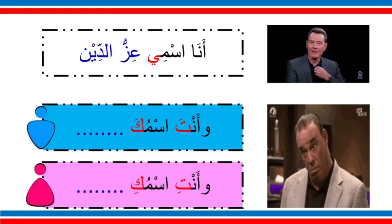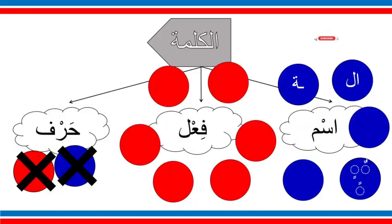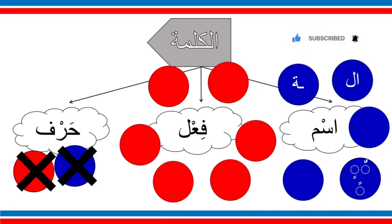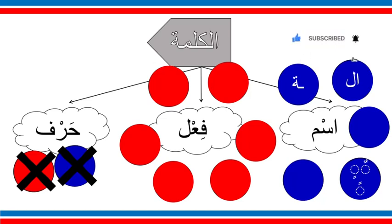From this video remember: al-kalima — the word — is one of three types: ism, fi'il, or harf. Ism has five signs (khams alamat), fi'il has six signs (sit alamat), and harf has no signs. In the comments, write 'ana ismi' then write your name — for example, 'ana ismi Ahmad'. If you don't have an Arabic keyboard, just write in English letters.